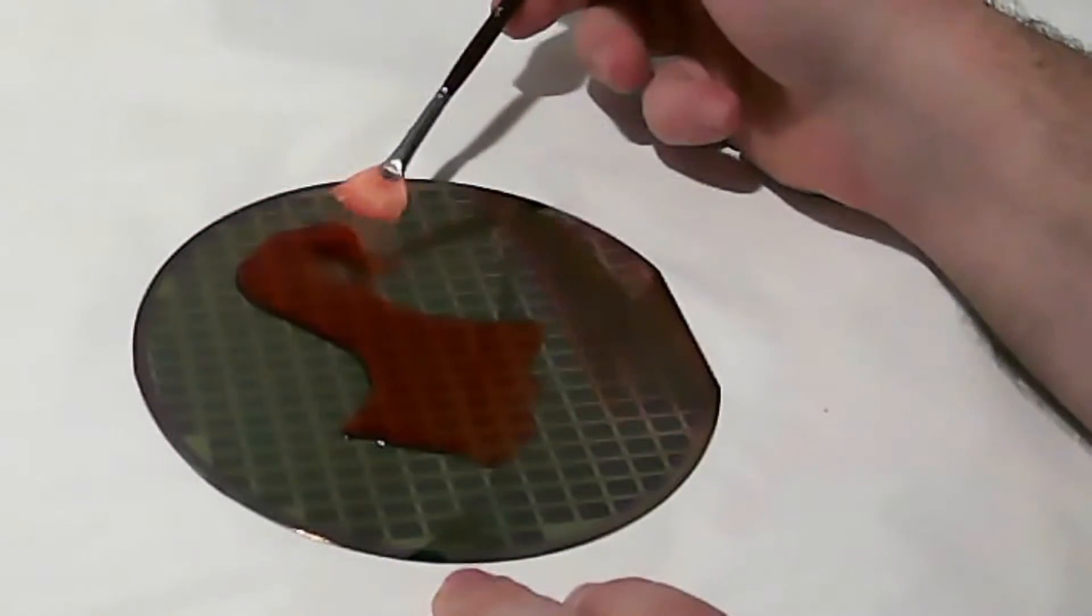Using a sable tube brush, we will gently pull at the surface tension of the polymer in order to spread it out along the disc.